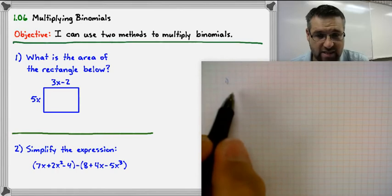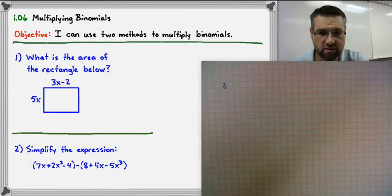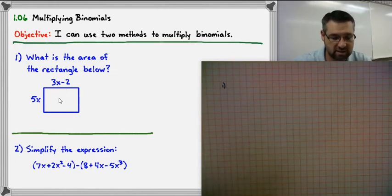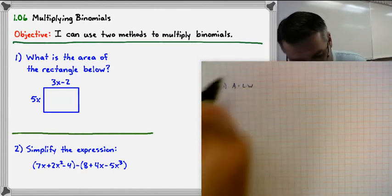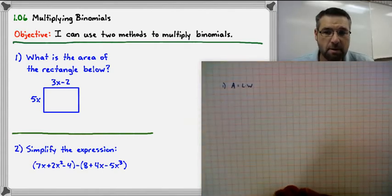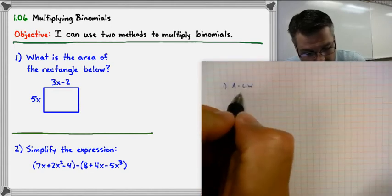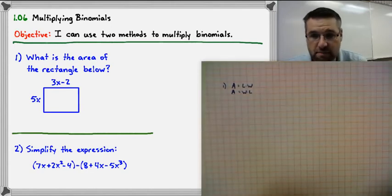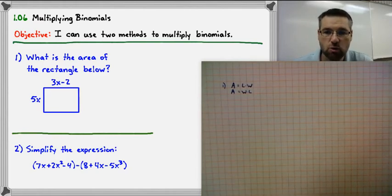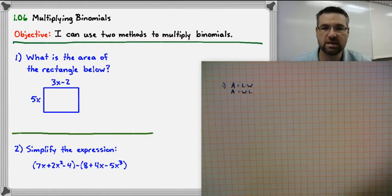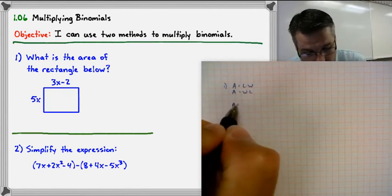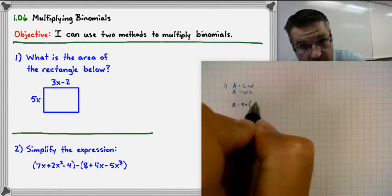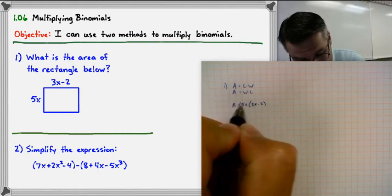We have a rectangle with a length of 3x minus 2 and a height of 5x. The area of a rectangle is always length times width — you may remember it as base times height. Multiplication is commutative, so you can rearrange the order and still get the same answer. We could label either dimension as length or width.